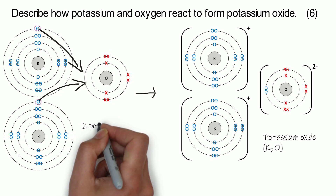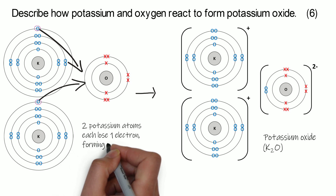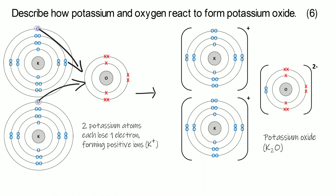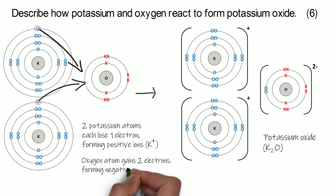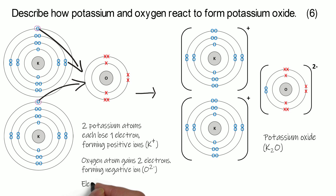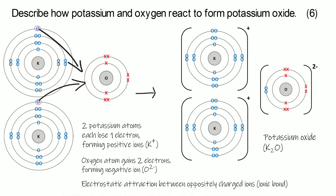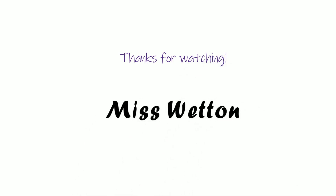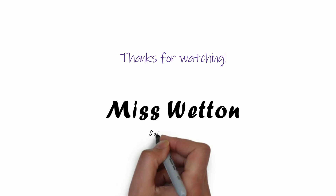The marking points for this question are: two potassium atoms each lose one electron and each forms a positive ion; the oxygen atom gains two electrons and forms a negative oxide ion; and there will be an electrostatic attraction between the positive and the negative ions — that is your ionic bond. It's pretty similar for every question you get asked on this topic. Thank you for watching — let me know in the comments what you want me to cover in the next videos, and I'll see you next time, bye-bye!